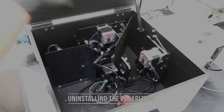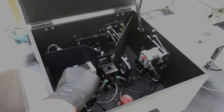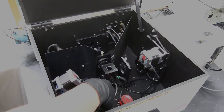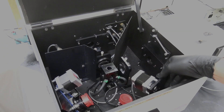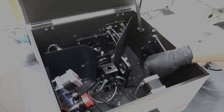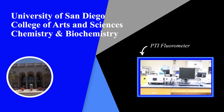If the polarizers were used, uninstall them: carefully pull up the polarizers, place the red covers over the lenses, and lean the polarizers against the inner walls of the sample compartment. The instrument SOP should be located next to the instrument. If assistance is needed, please look in the instrument SOP for the contact information of the Scientific Instrument Specialist.